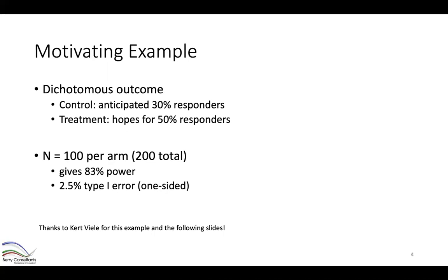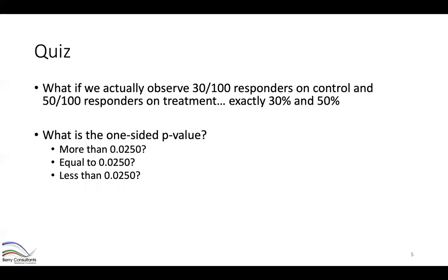So we have our sample size. Here's a little quiz — play along. Suppose we run this trial and accrue 200 subjects: 100 on control and 100 on treatment. At the end we observe 30 responders on control and 50 on the treatment arm — exactly the 30% versus 50% rate we hypothesized. What do you think is the one-sided p-value? Is it more than two-and-a-half percent, equal to it, or less?